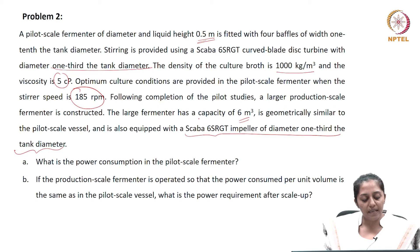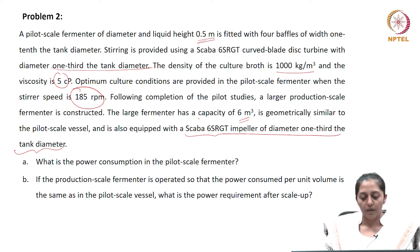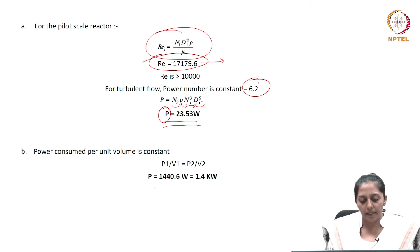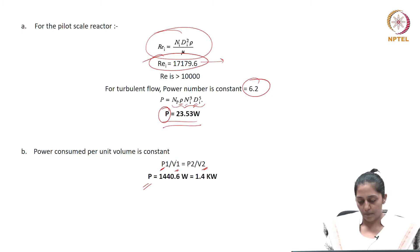Let us see Part B. Part B says that if the production scale fermenter is operated so that the power consumed per unit volume is the same — our scale-up criteria is power per unit volume (P/V) at the pilot scale level — then we need to find how power consumed changes at the production scale. If P/V is the scale-up criteria, and the volumes at both scales are known along with the pilot scale power, the power consumed at the production scale comes out to be 1.4 kilowatts.